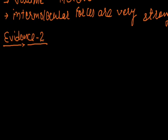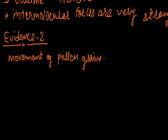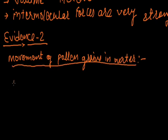Evidence two: these particles are constantly moving. Now we have to prove how these particles are moving. For this we have to perform an experiment—movement of pollen grains in water. There was a scientist named Robert Brown who performed an experiment on movement of pollen grains in water in 1827.